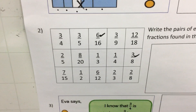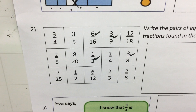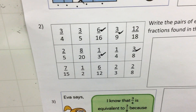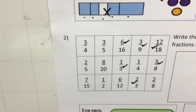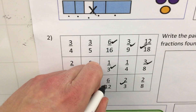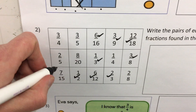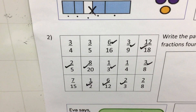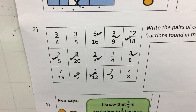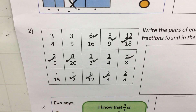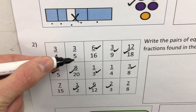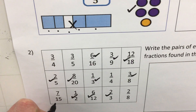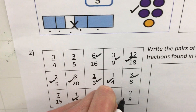Three ninths can be simplified — three ninths equals one third. Twelve eighteenths: both twelve and eighteen can be divided by six, which gives us two thirds. One half is equivalent to six twelfths. Two fifths is equivalent to eight twentieths — five times four is twenty, two times four is eight. The remaining fractions: seven fifteenths cannot be simplified because seven and fifteen are not divisible by the same number. The final pair — one quarter is equivalent to two eighths.